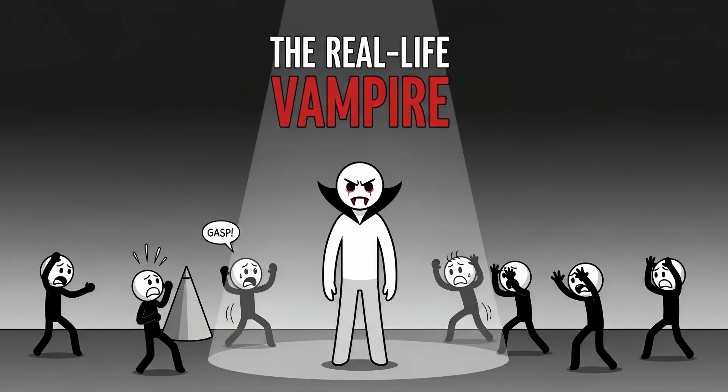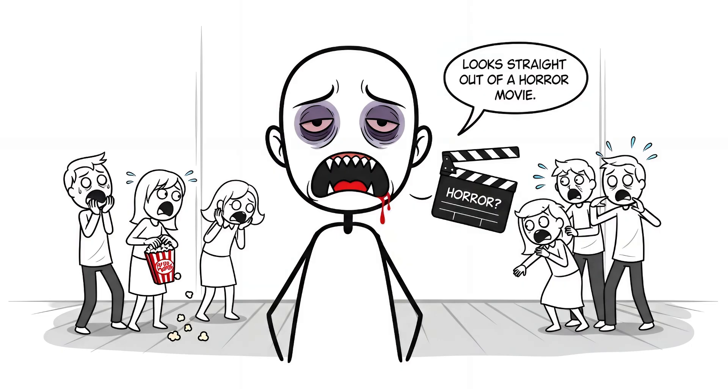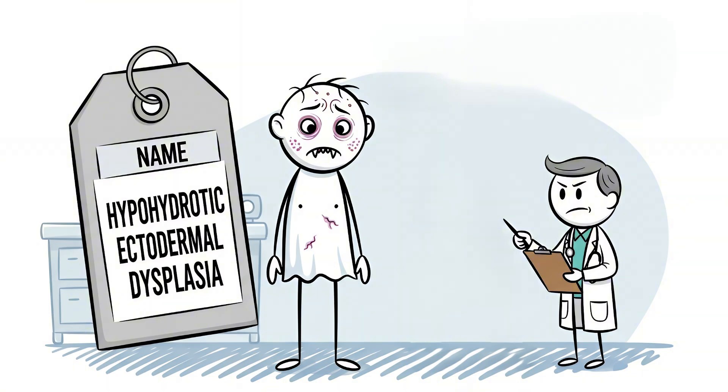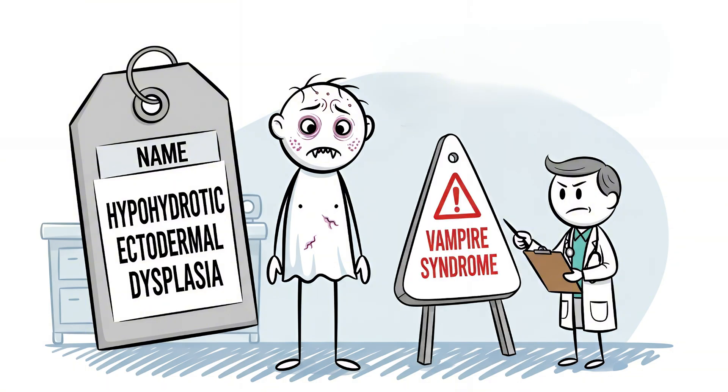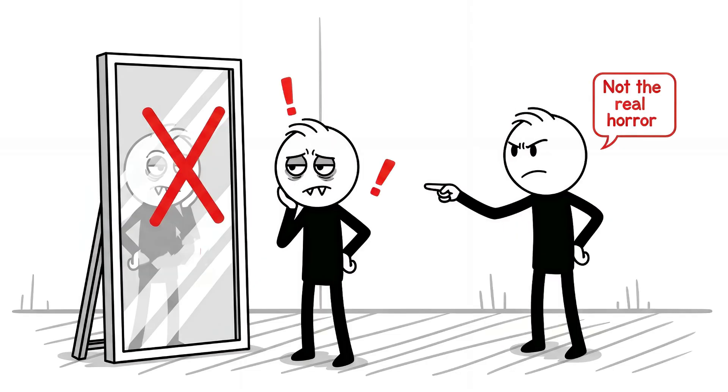Number 1. The real-life vampire. If you saw someone with ghost white skin, pointed teeth, no hair, and dark circles, you'd think they stepped out of a horror movie. This is hypohydrotic ectodermal dysplasia, or the vampire syndrome. It destroys your sweat glands, teeth, and hair. But the real horror isn't how you look. It's thermal.